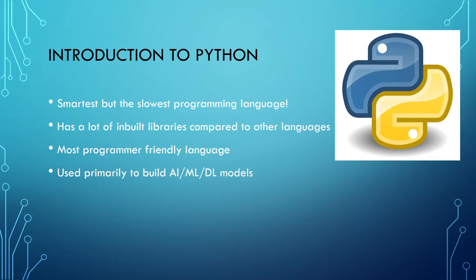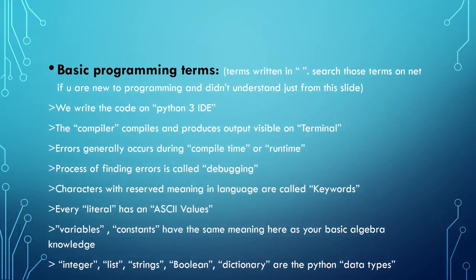Python is much more user-friendly. Let us cover some basic programming terms, assuming you know nothing. You can fast-forward if you already know these. We write code in Python 3 IDE, Jupyter Notebook, or Anaconda Navigator. The compiler compiles and produces output visible in the terminal. Errors occur at compile time or run time. Finding errors is called debugging. Characters with reserved meaning are called keywords. Every literal has an ASCII value. Variables are not fixed; constants are fixed — same as basic algebra.